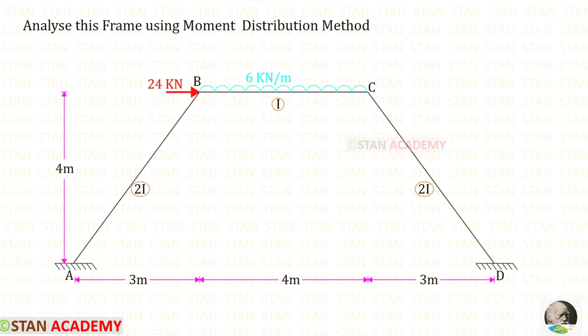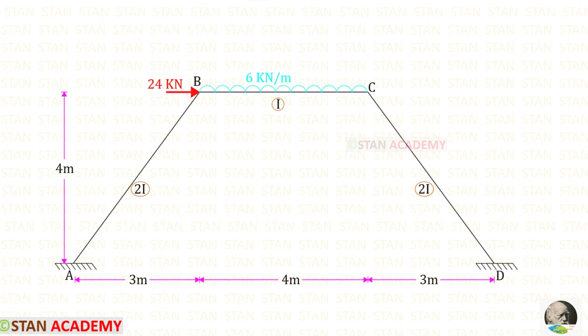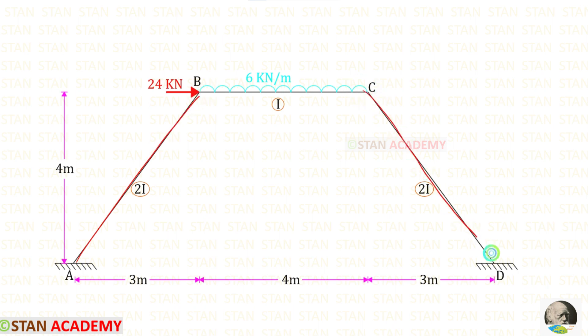Hello everyone. Today we are going to analyze this frame using the moment distribution method. In this frame there are two inclined members AB and CD, and also a horizontal member BC. The moment of inertia for AB and CD is 2I and for BC it is I.